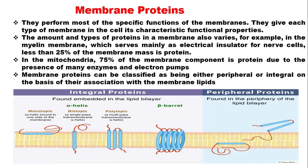In the mitochondria on the other hand, 75% of the membrane component is protein, due to the presence of many enzymes and electron transport components involved in respiratory and metabolic activities where energy is produced. Membrane proteins can be classified as either peripheral or integral proteins on the basis of their association with the membrane.